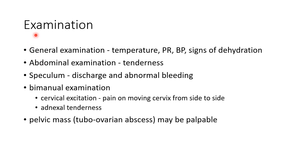On examination, general assessment should note temperature, pulse rate, blood pressure, and signs of dehydration. Abdominal examination may reveal tenderness. Speculum examination might reveal discharge and abnormal bleeding. Bimanual examination may reveal cervical excitation — pain on moving the cervix from side to side — and adnexal tenderness. A pelvic mass such as a tubo-ovarian abscess may be palpable in some cases.